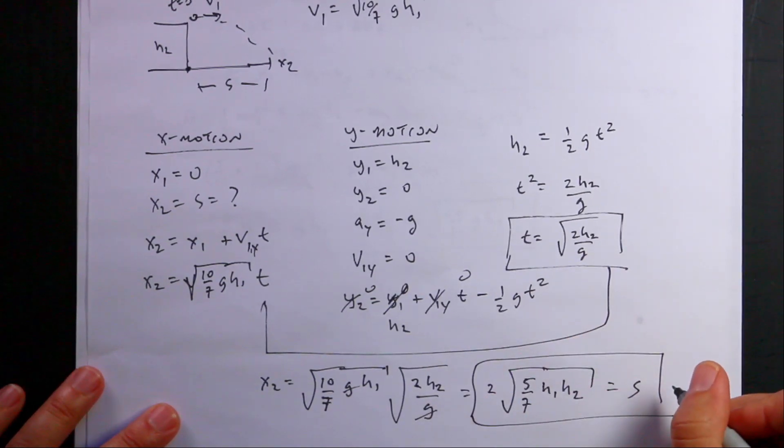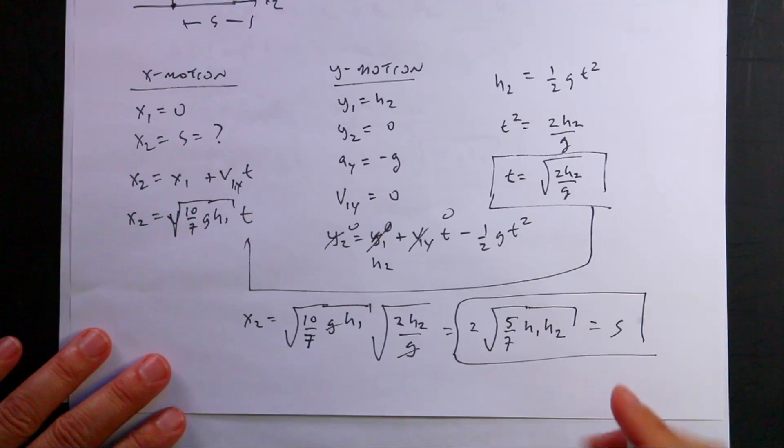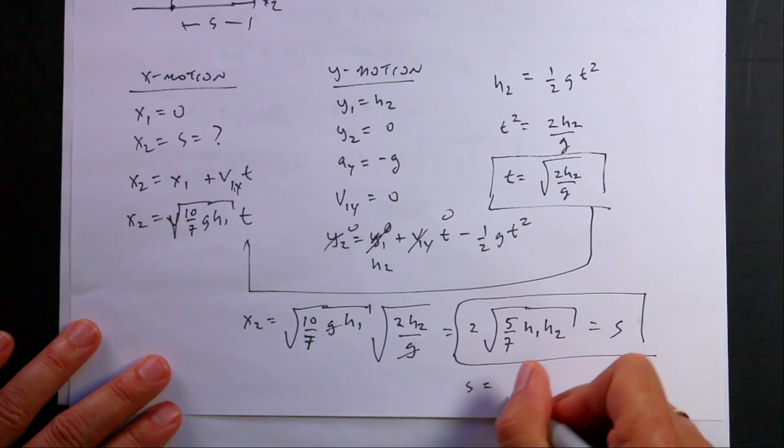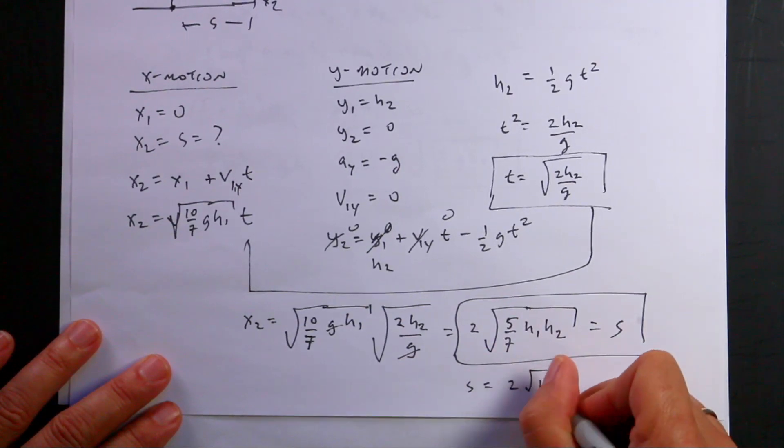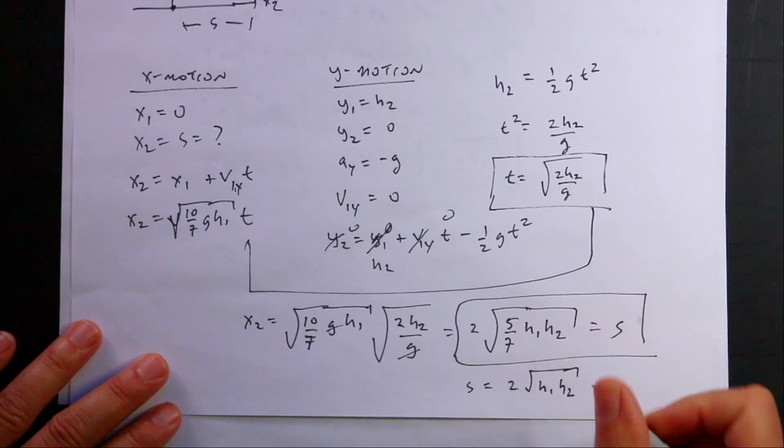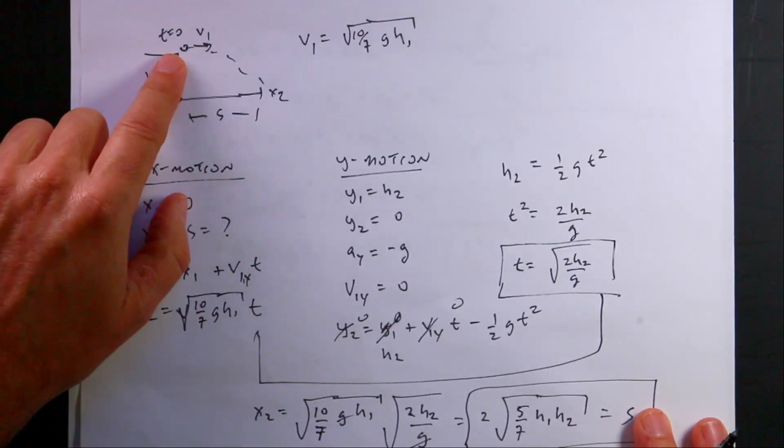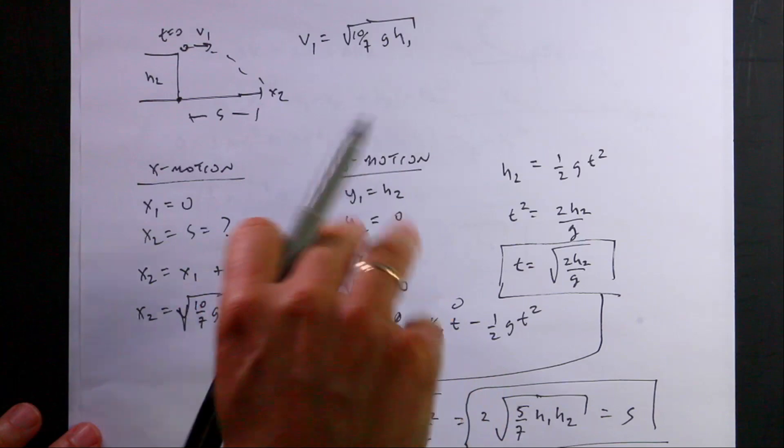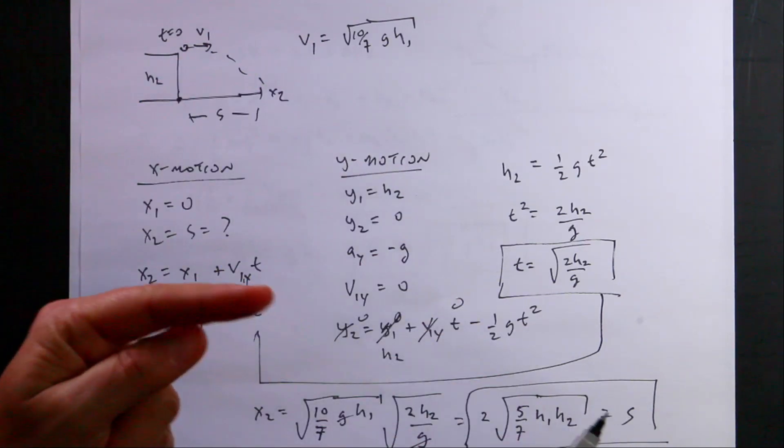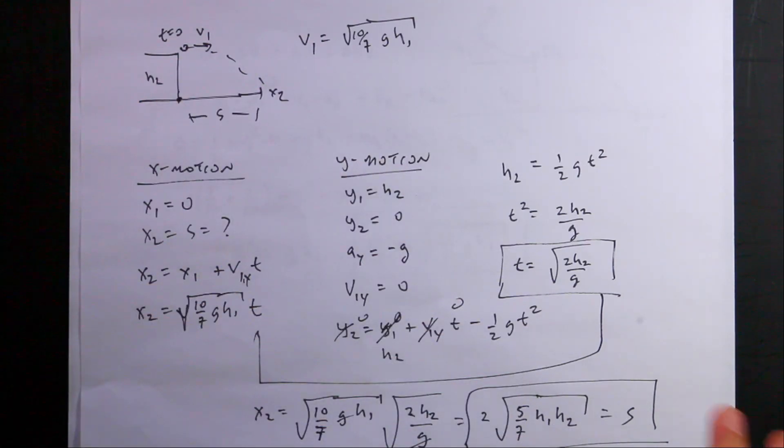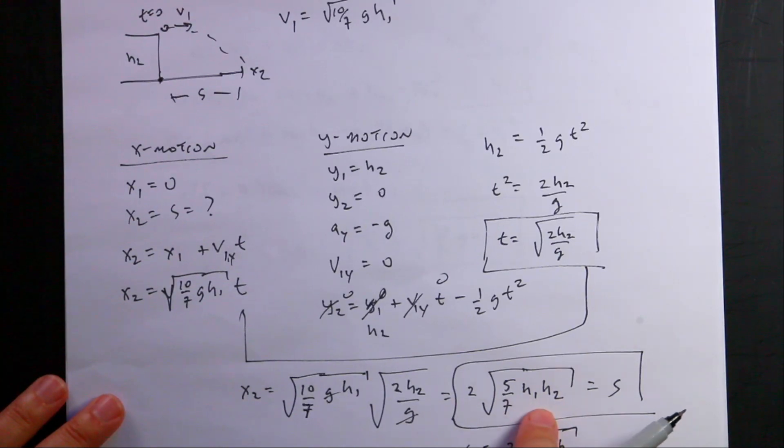So just for comparison, before I had s equals 2 square root of h1 h2. So in this case, I'm multiplying by a number less than one, so it's not going to go as far. It's not going to go as far because once it gets to the bottom, it's not going to be going as fast because the energy goes into rotation and translation, so you have to split some of the energy, you're not going to be going as fast. But that would be the answer if you have a rolling ball.